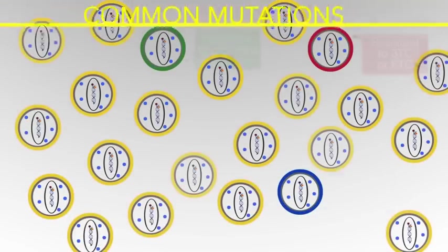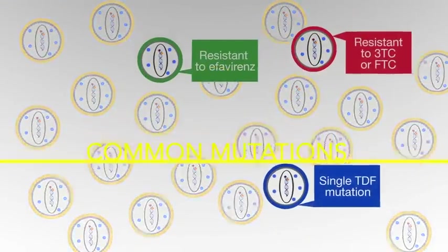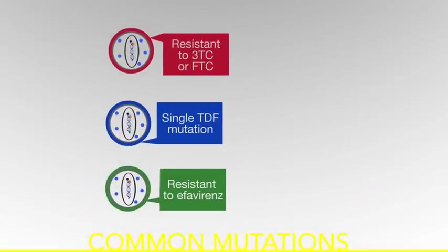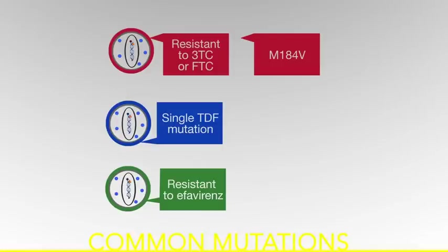The common mutations we see at first and second line failure are for FTC or 3TC is the M184V. That nomenclature basically means that the protein that is in the position 184, which is the M or methionine, is replaced with the V protein through the mistake made by the reverse transcriptase. So at position 184, we are replacing M with V, and that is the name of the mutation. That mutation takes out 3TC and FTC.